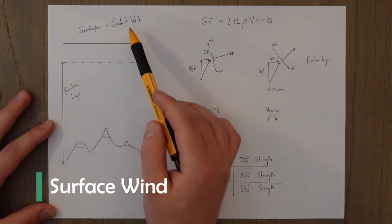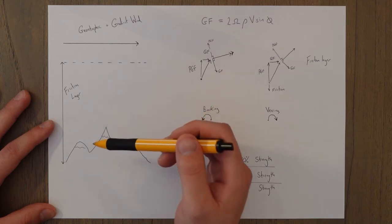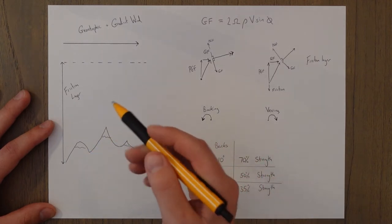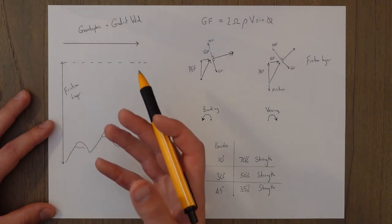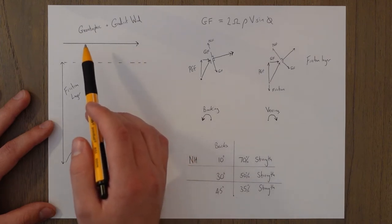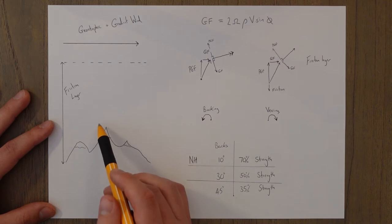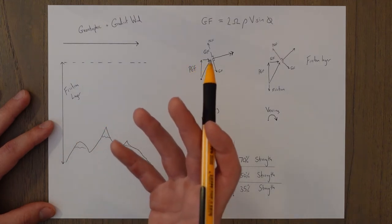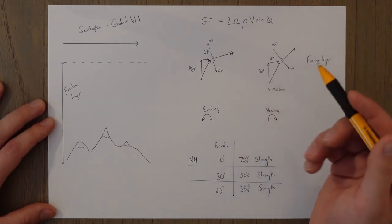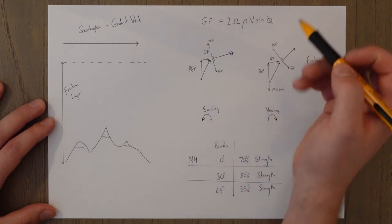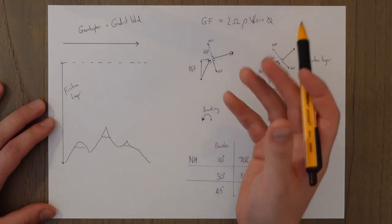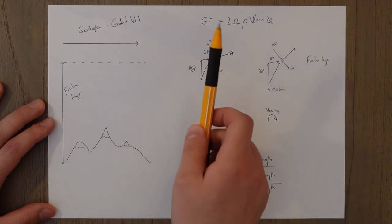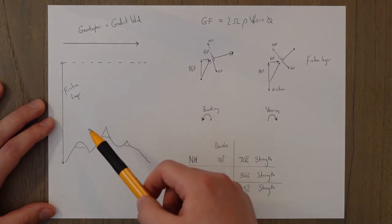The geostrophic wind and the gradient wind are considered to exist outside the turbulent surface layer, known as the friction layer. Inside this layer, geographic features such as mountains and rising thermal air pockets cause a lot of turbulence and friction, slowing down the gradient and geostrophic winds close to the Earth's surface. The closer we are to the surface, the more disruption there is and the slower the wind. When friction slows the wind, the geostrophic force also reduces with the lower wind speed.